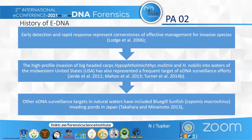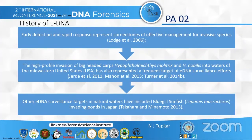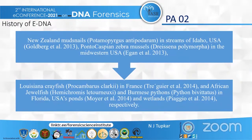Regarding the history of environmental DNA: eDNA is useful for the early detection of and rapid response to invasive species. Invasion of bighead carps into water has been targeted through environmental DNA surveillance. Environmental DNA from natural water bodies has also included bluegills and fish invading ponds in Japan. In all these cases, environmental eDNA is quite helpful in knowing which species live in a particular region.